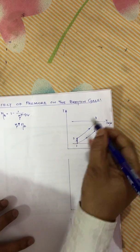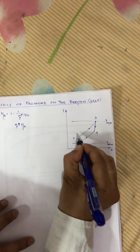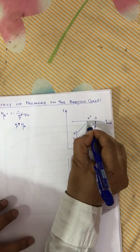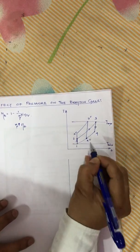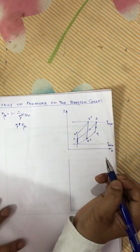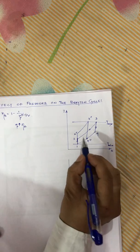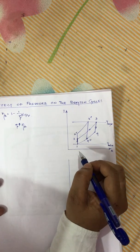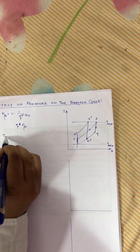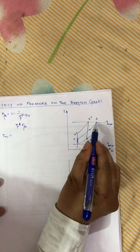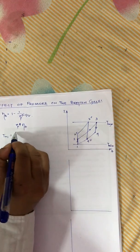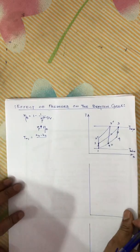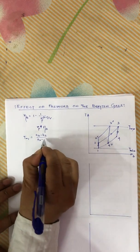If the pressure ratio increases, the shape of the cycle will increase — 2 becomes 2 double dash, 3 becomes 3 double dash, 4 becomes 4 double dash, just like that. At this low pressure ratio, the mean temperature of heat addition Tm1 equals (H3 minus H2) divided by (S3 minus S2).